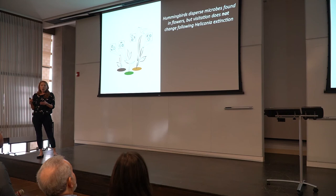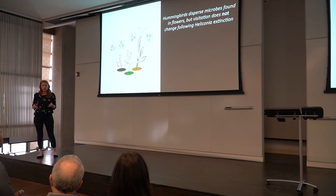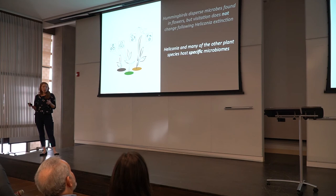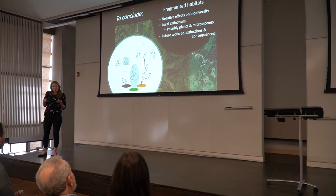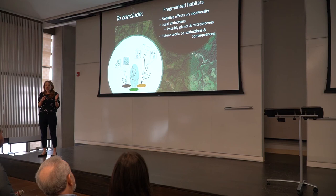Turning to our data from the camera traps, we see that hummingbird visitation is not affected by the removal or extinction of Heliconia at these sites. But interestingly, we do see that Heliconia and many of the other co-flowering species host species-specific microbiomes. Taken together, while the negative effects of fragmentation on plants and animals at the macro level are already appreciated, we're likely to also see negative effects of fragmentation, deforestation, and habitat loss at the microbial level.